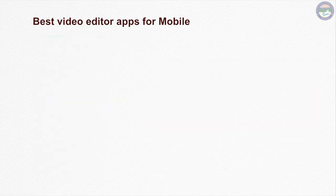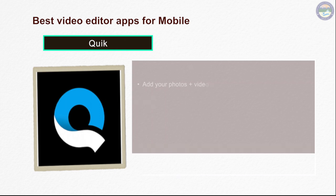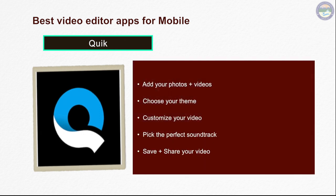Quick is a new generation video editing app. You can use images to edit your videos. This app has everything a video editing app should have — you can easily trim, crop and add music to your video.